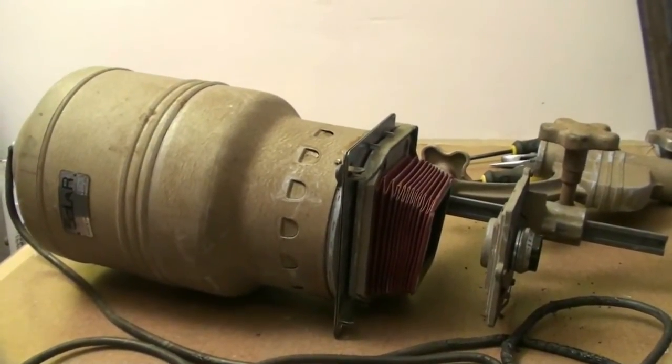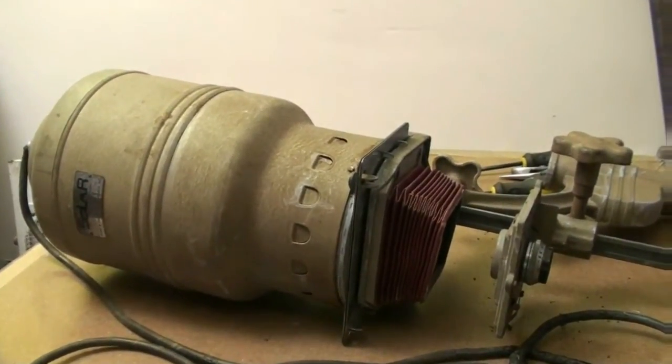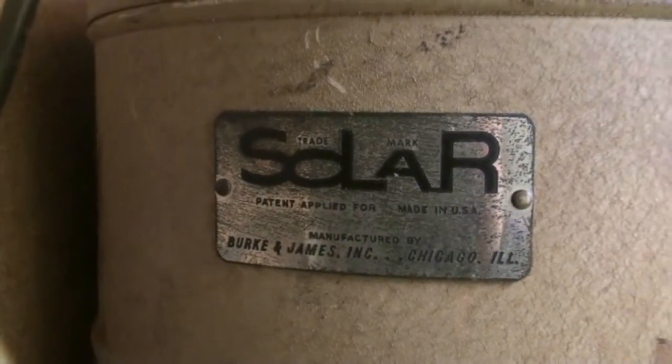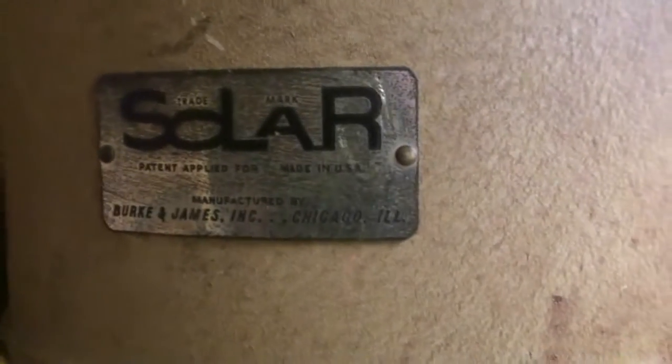Although that would be an interesting concept. But anyway, what we've got here is, as you guessed it, another trash find. It is a solar enlarger by Birkin James Incorporated, Chicago, Illinois. I have no idea how old this thing is, but here's the support post for it.